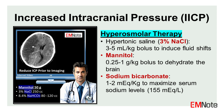Hypertonic saline (3% sodium chloride): administered at a dose of 3 to 5 milliliters per kilogram as a bolus, hypertonic saline is effective in lowering ICP by inducing fluid shifts out of the brain.